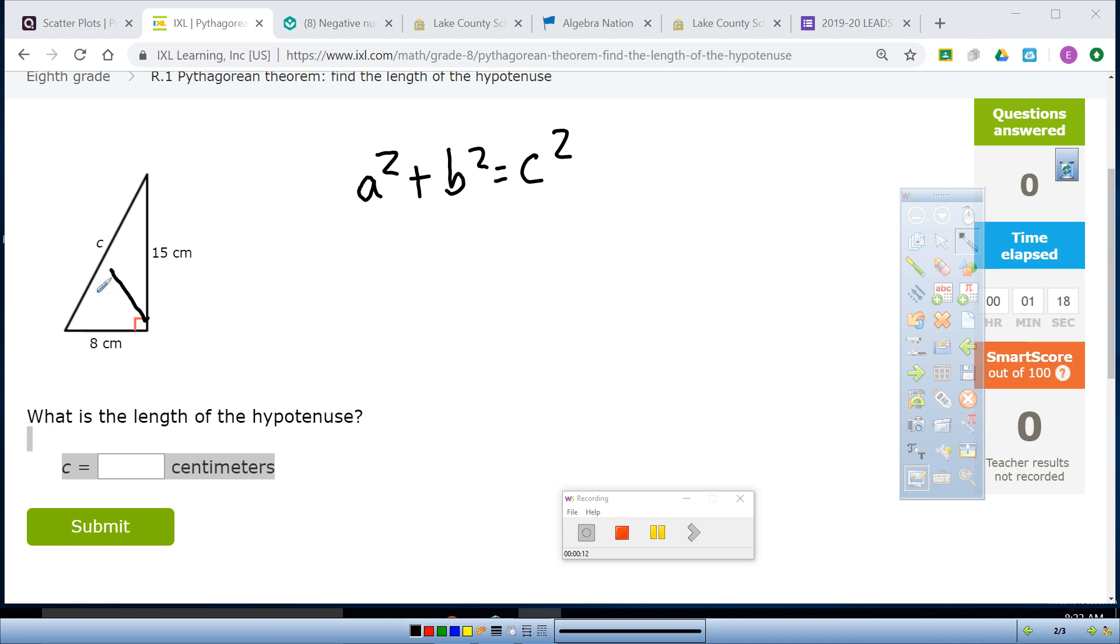C is always going to be diagonal from the right angle, and it is going to be called the hypotenuse, which is the longest side. So anytime you see the word hypotenuse, they are talking about the side directly across from the right angle, and it is the longest side.